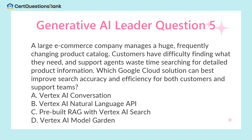A large e-commerce company manages a huge, frequently changing product catalog. Customers have difficulty finding what they need, and support agents waste time searching for detailed product information. Which Google Cloud solution can best improve search accuracy and efficiency for both customers and support teams? A. Vertex AI Conversation. B. Vertex AI Natural Language API. C. Pre-built RAG with Vertex AI Search. D. Vertex AI Model Garden. The answer is C.